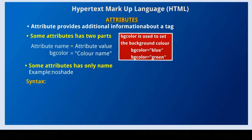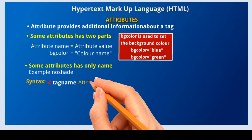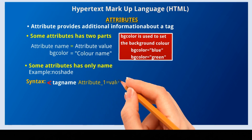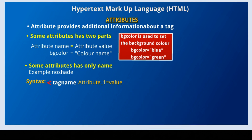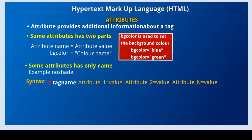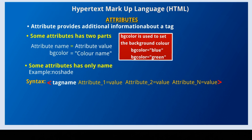Syntax of attribute: first we have to insert the less than symbol, then write the tag name, after that leave a space, write the attribute name and equal to symbol, then write the value of the attribute. We can insert zero or more attributes in a tag. After writing all attributes, insert the greater than symbol. Now we can see how to insert the attributes bgcolor and text in the body tag.